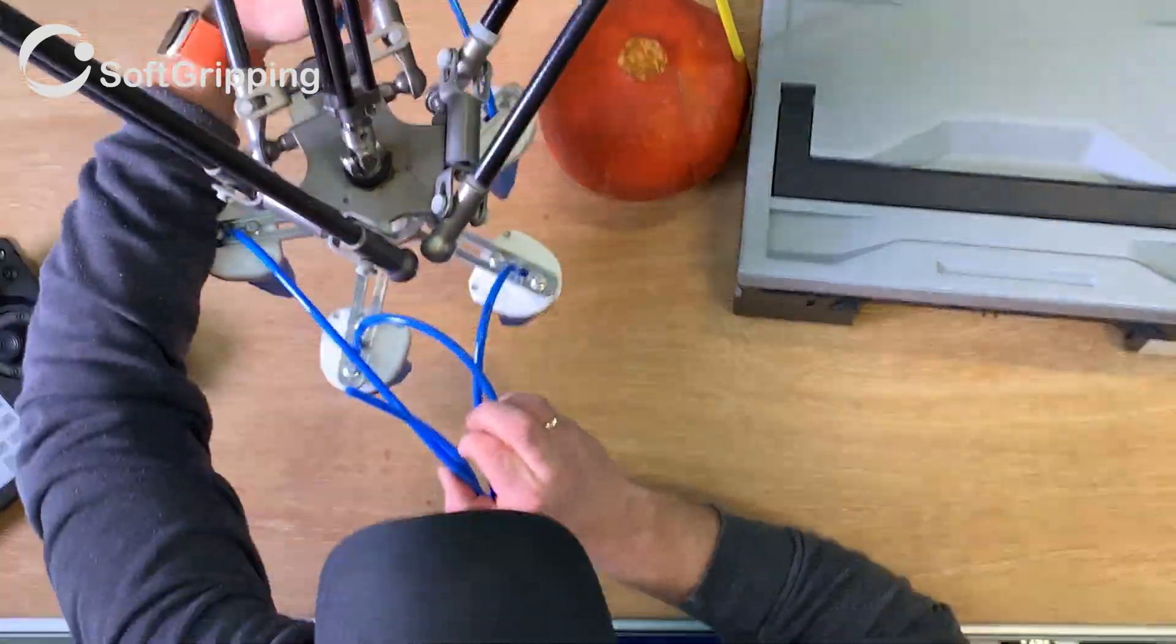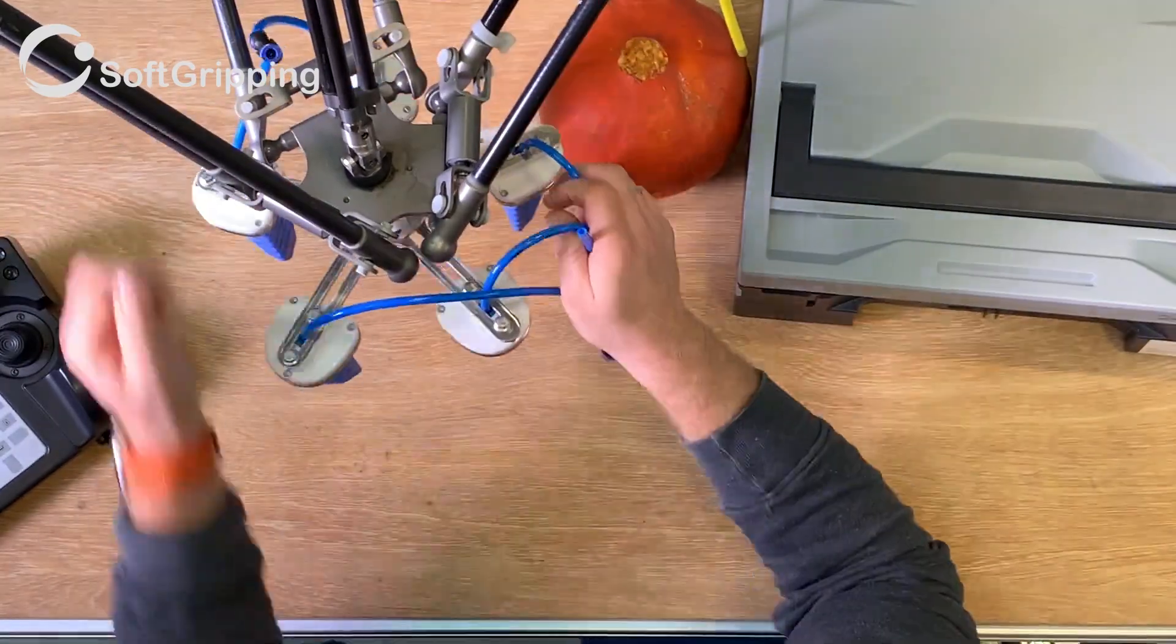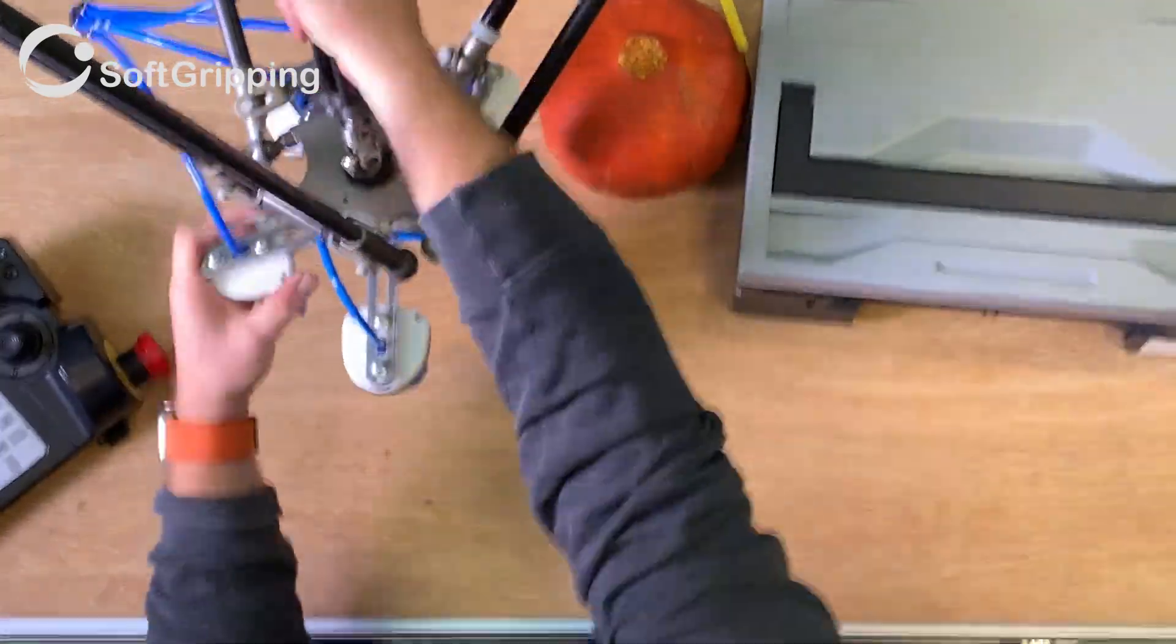After connecting the gripper to the delta robot and reconnecting the air supply, we can do our first tests.